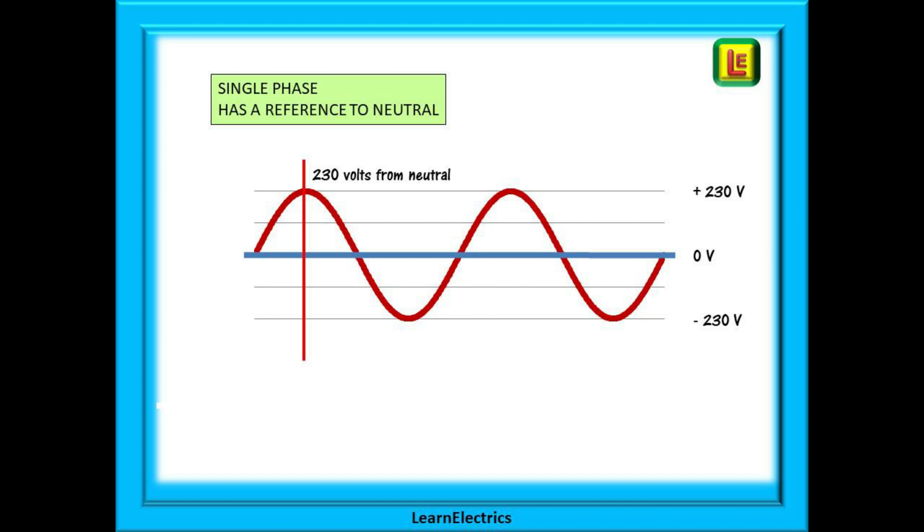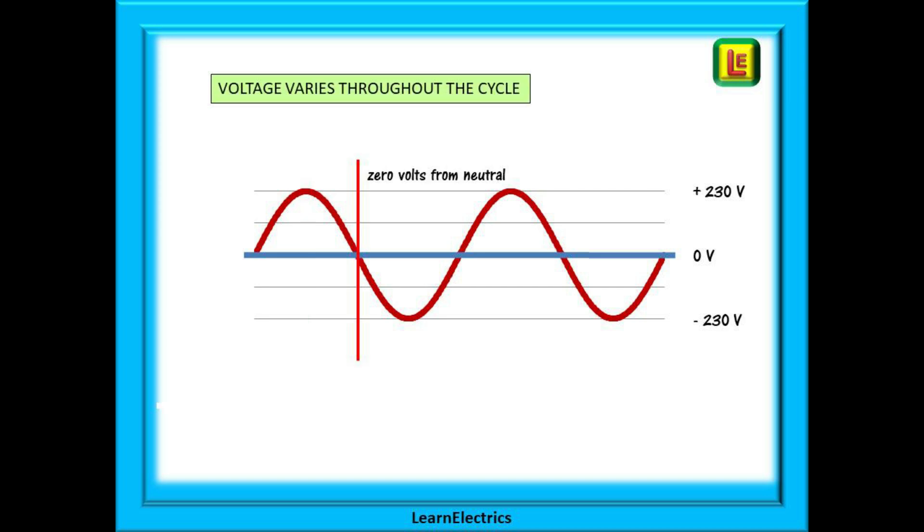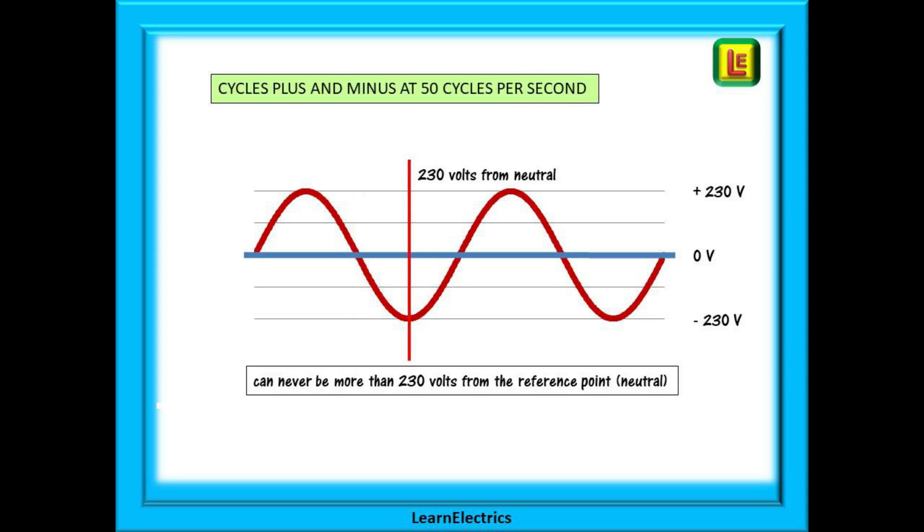Look at the single phase waveform first. At some point the waveform is at a maximum in the positive direction, what we call plus 230 volts above neutral. Then the voltage falls until it is zero, equal to neutral. It continues to fall until it is at minus 230 volts below the neutral. And the cycle repeats up and down, up and down. The voltage in a single phase system is always referenced to neutral and can never be more than 230 volts from the neutral or reference point.